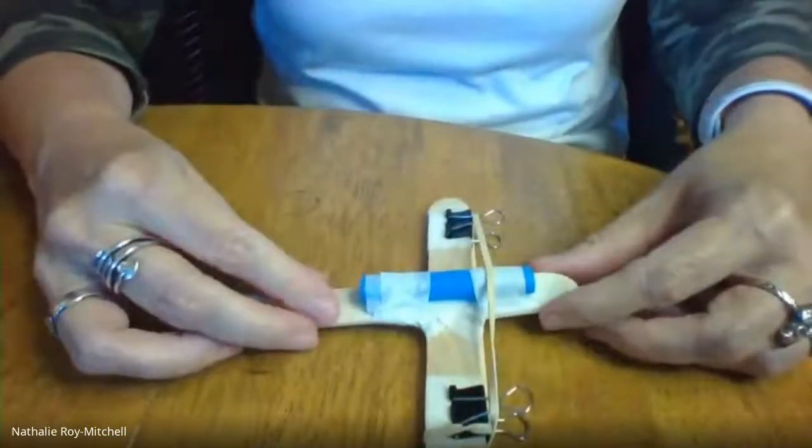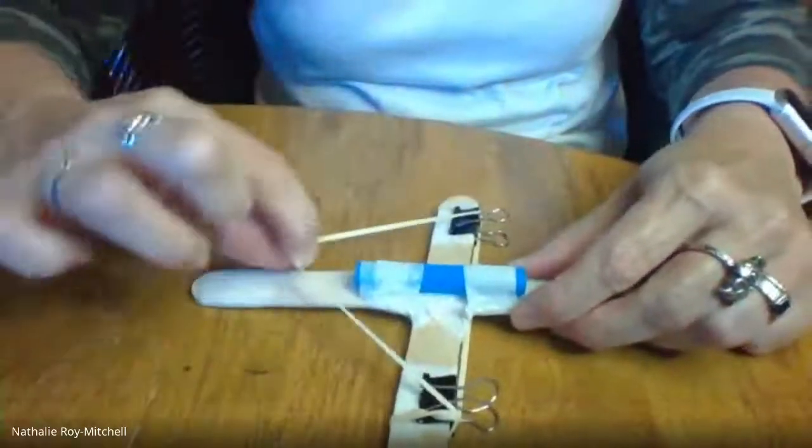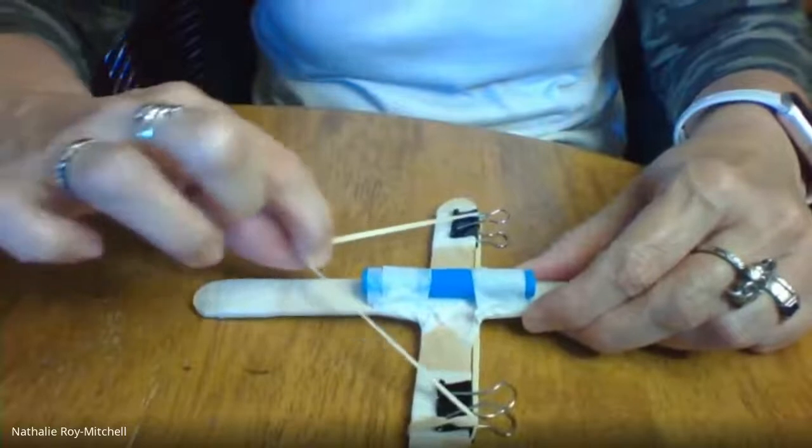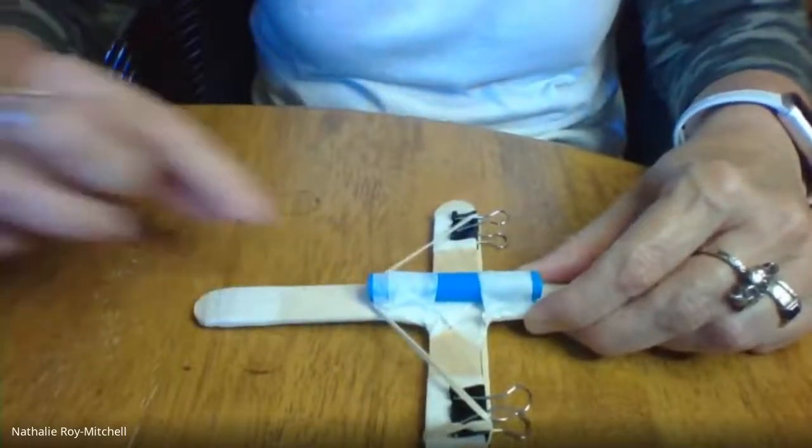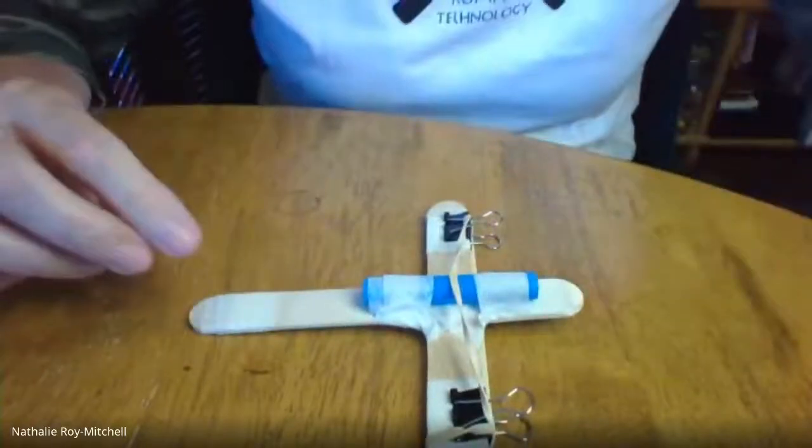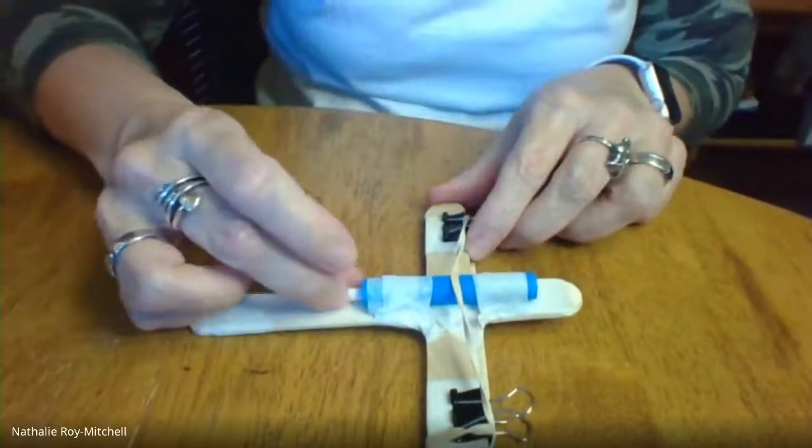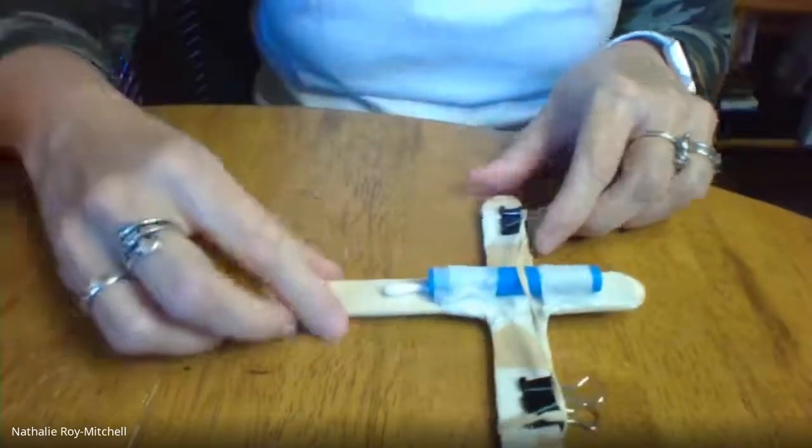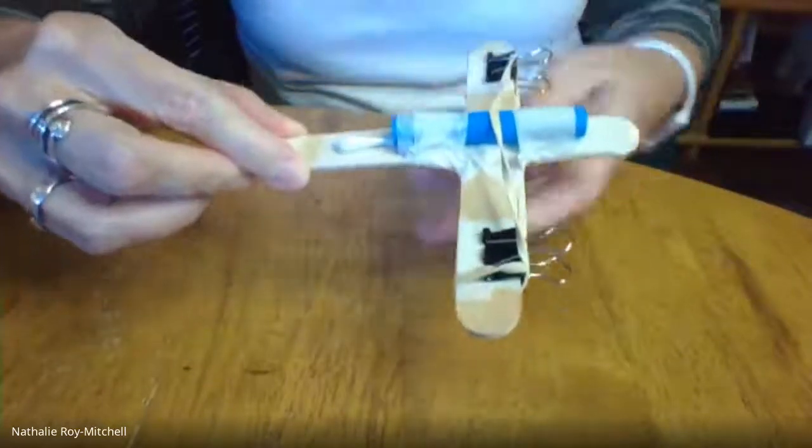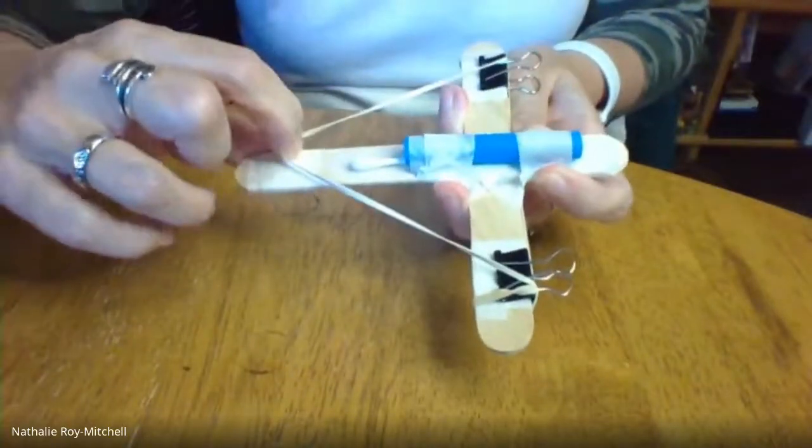Now we basically have a working scorpion. Because this is going to become our shooter. All right. So all we have to do now is insert our Q-tip. And we shoot.